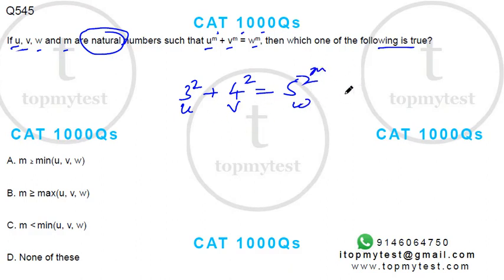So m is less than the minimum of all these values. So this is out, this is out. So your option can be either this or this.